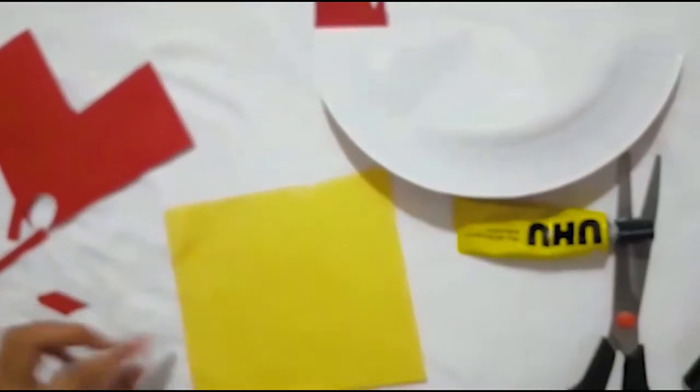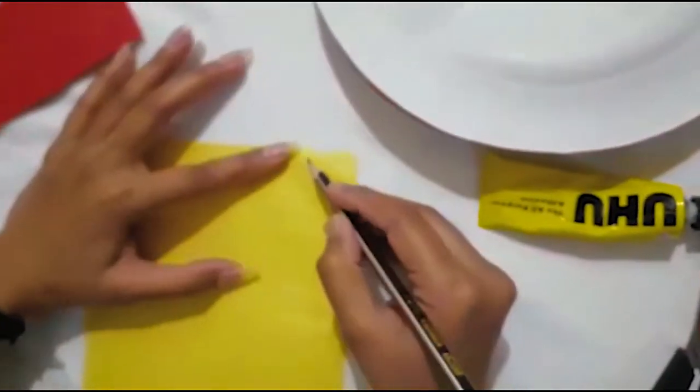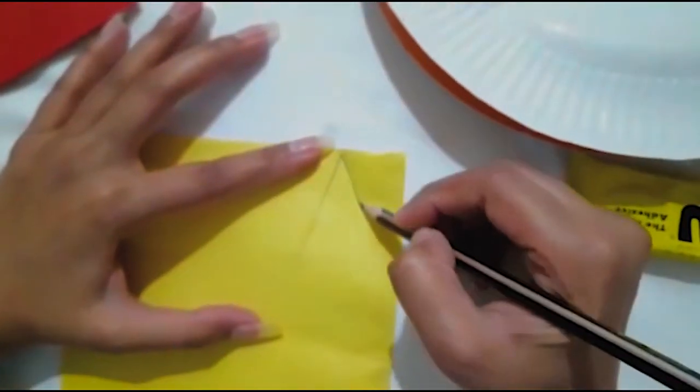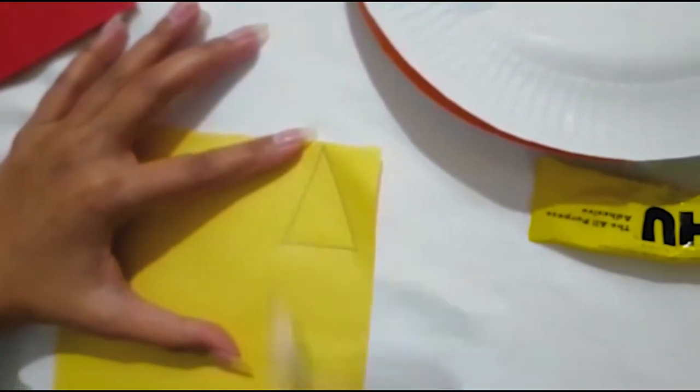Now pick up a piece of yellow chart paper to make a beak of the hen. With the help of a pencil, draw a triangular shape and cut it out.